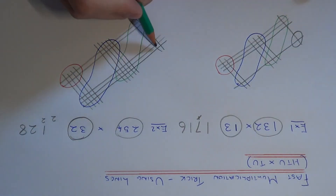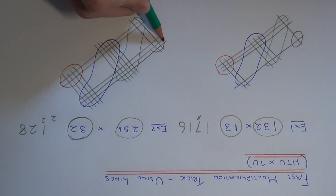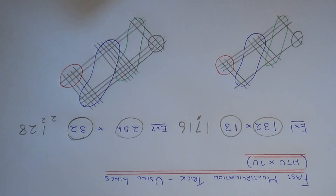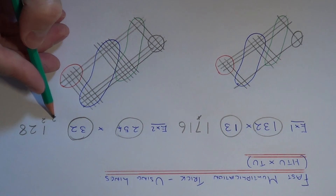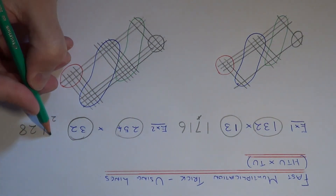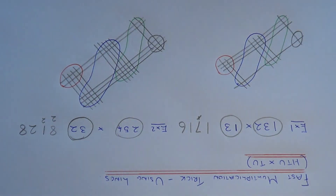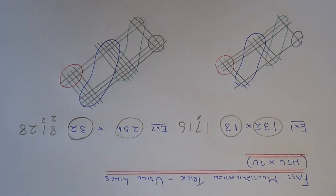And finally we just need to count the intersections here. So we have one, two, three, four, five, six, plus the two carried over, makes eight. So our final answer is 8,128. Thanks for watching.